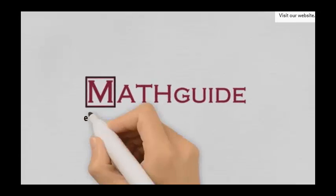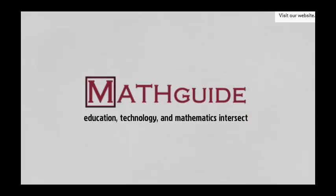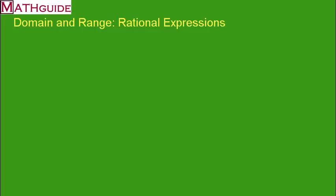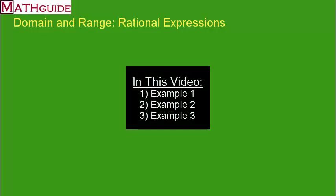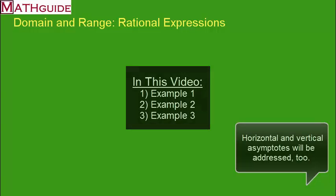This is MathGuide.com and my name is Mark Karadimos. In this video we will be looking at three examples containing rational expressions. We will calculate horizontal and vertical asymptotes.